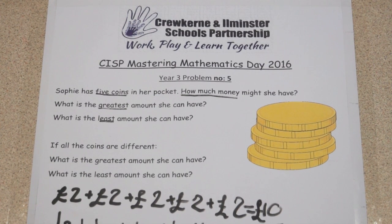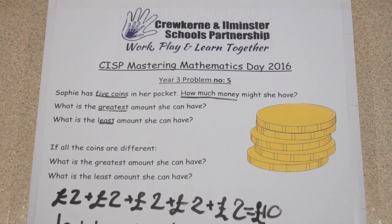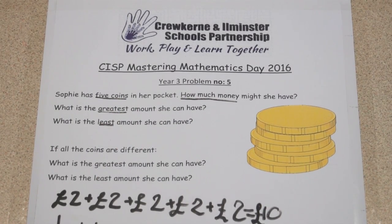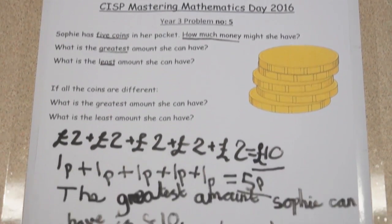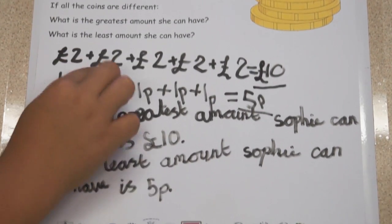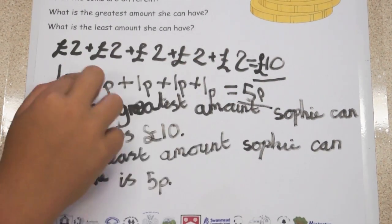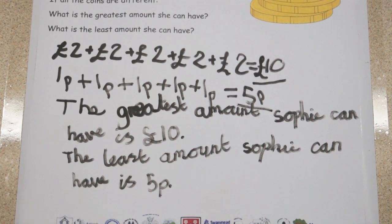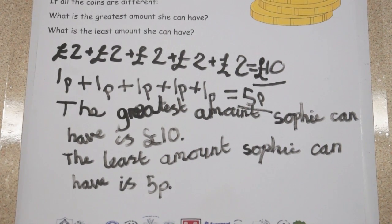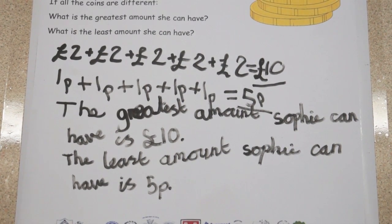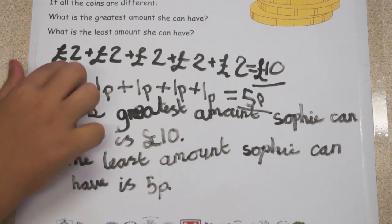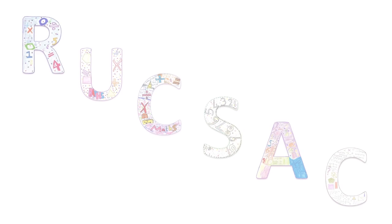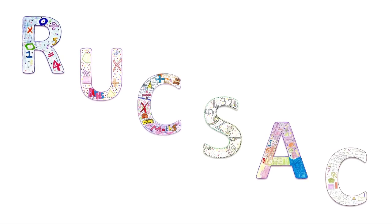C is for check. To do that we need to look back at the question. Do both of our answers have 5 coins? Yes, they do. Are we certain that they are the greatest and least amount? Yes, because they use the biggest and smallest possible coins. Great — we've solved it. So that's RUCKSACK in action.